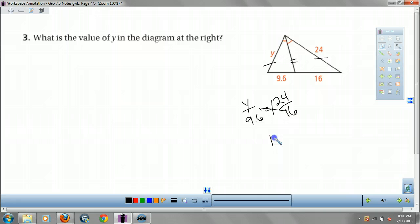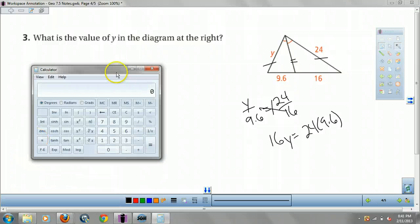Cross multiply. 16Y equals 24 times 9.6. Grab my handy dandy calculator. Why do I put this thing away? Such a pain getting out of my desk. Multiply those. Divide that by 16. 14.4. That's all there is to it, guys.